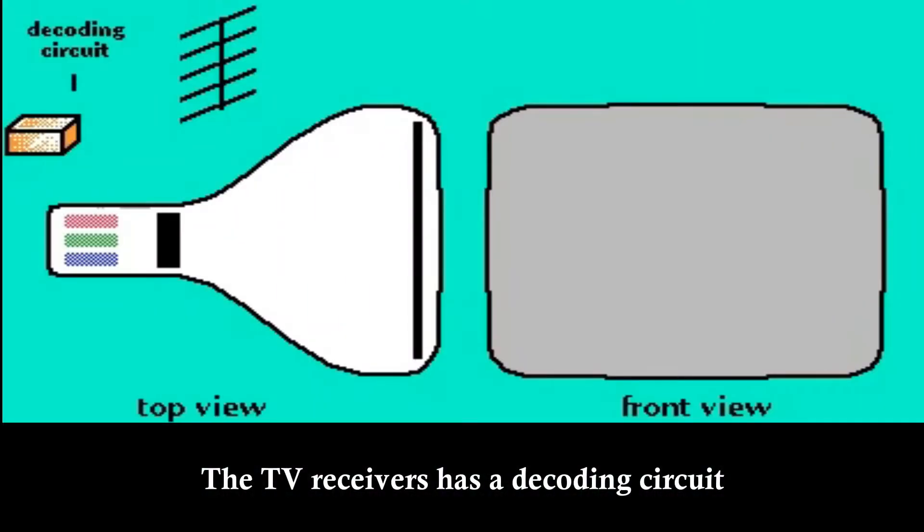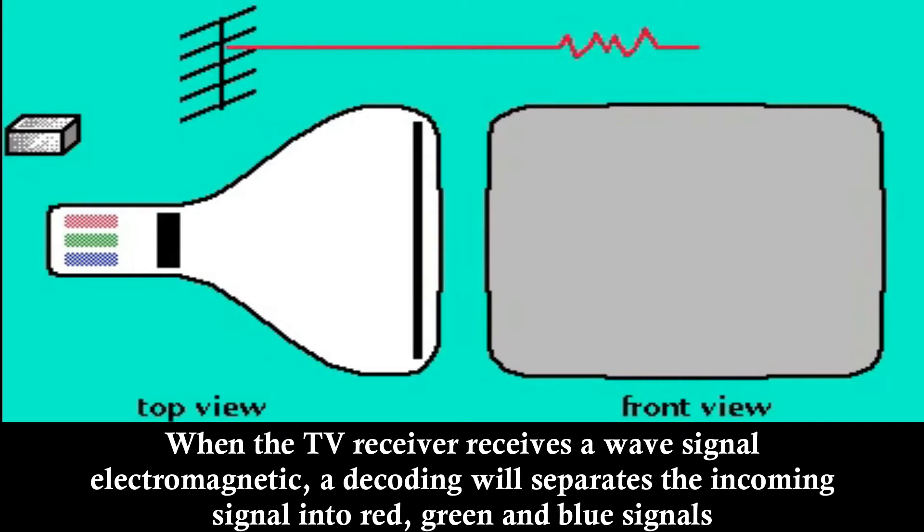The TV receiver has a decoding circuit. When the TV receiver receives an electromagnetic wave signal, the decoder separates the incoming signal into red, green, and blue signals.